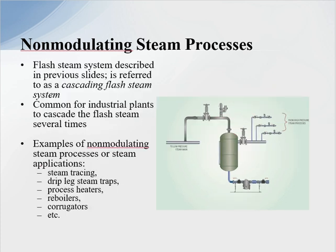This is what we refer to as cascading flash steam — common in industrial plants to cascade flash steam several times from very high pressure down to lower pressure. Some examples of non-modulating steam applications include steam tracing systems, drip leg steam traps, process heaters, reboilers, corrugators, and more. Anytime we have a non-modulating load, we can take it into a flash tank and cascade down to a lower pressure or recover all the flash steam.